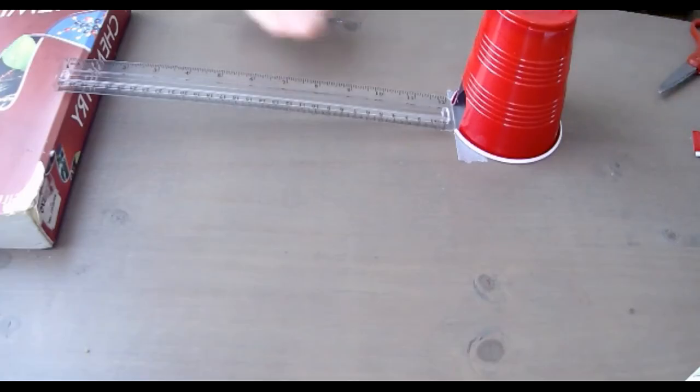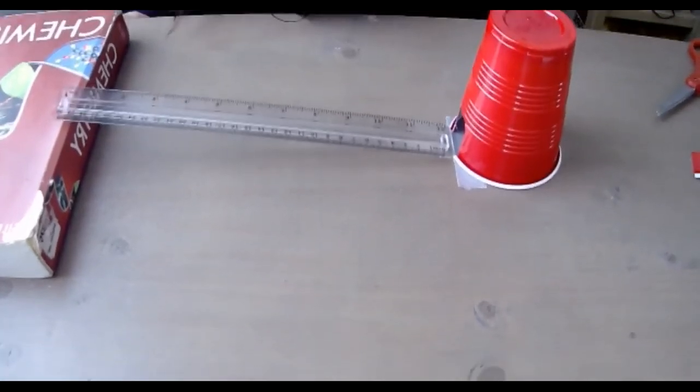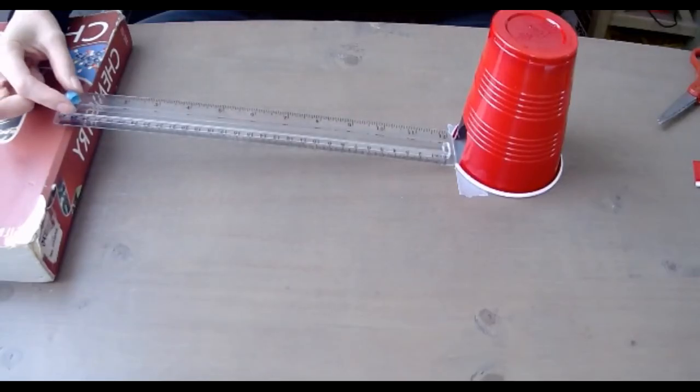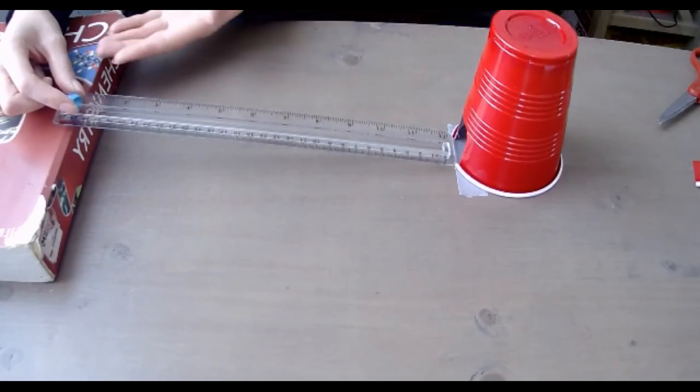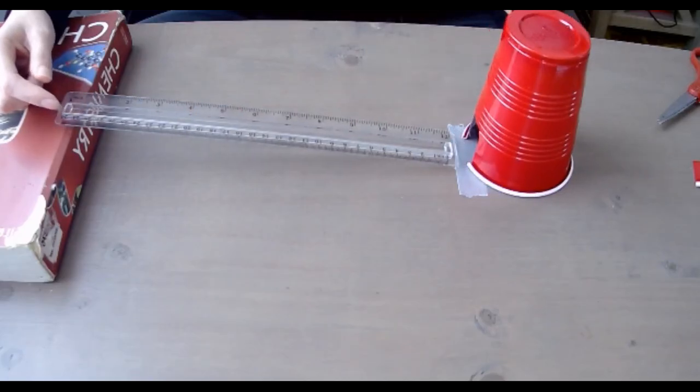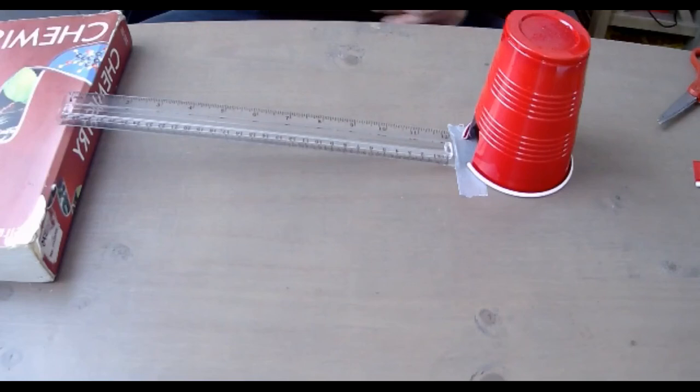Once I have my entire apparatus set up like this, we're ready to run our first set of trials. In this trial at my lowest height, I'll take my marble and place it at the very top of the ramp. I don't want to push it or throw it - I simply want to place it and allow the height of the ramp to do the work. I'll place my marble and allow it to roll down into my cup. The marble should push your cup back some distance.